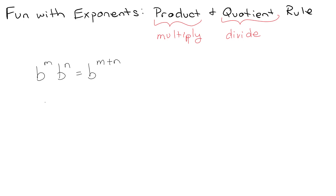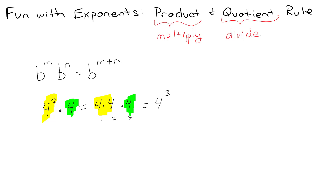The idea would be, say I have four squared times four. Four squared means four times four, and then the other times four is just one more four. So I've got one, two, three fours — that's four to the third. So I could just write them all out and get four cubed, or I could remember that the lone four has a hidden exponent of one. So four cubed is the same as four to the two plus one.